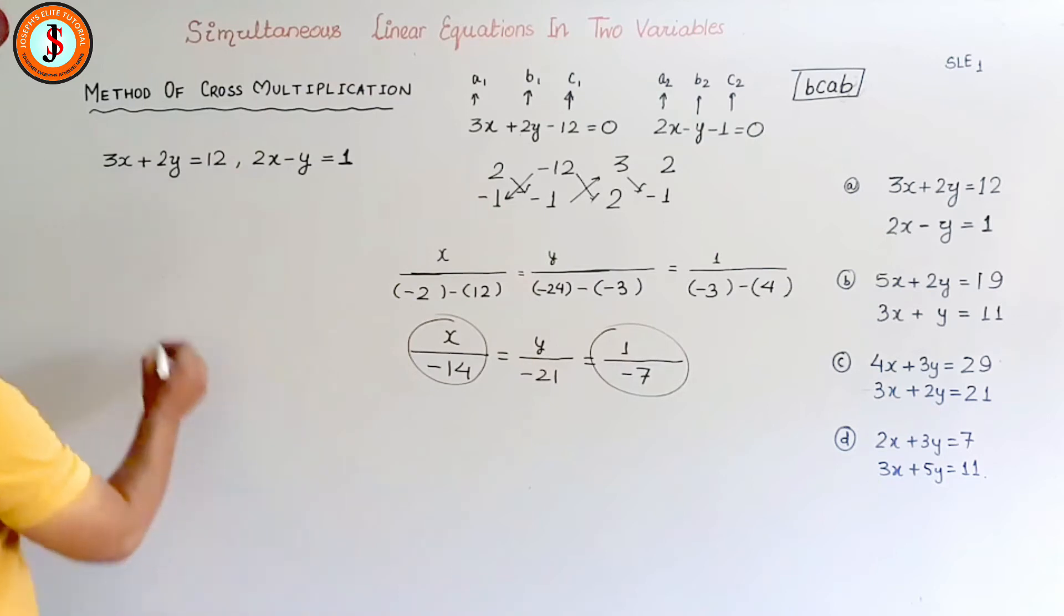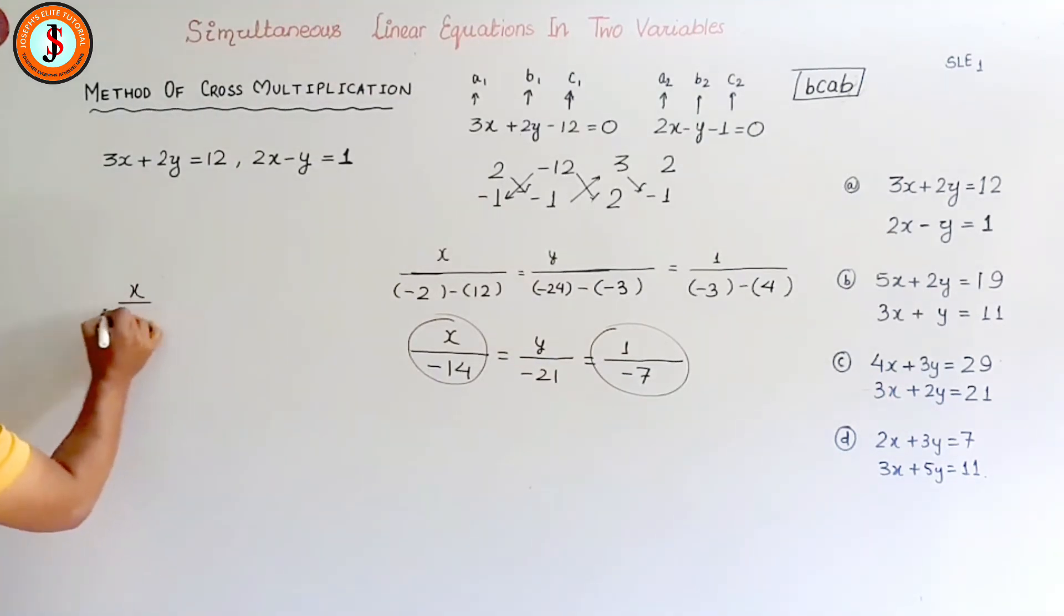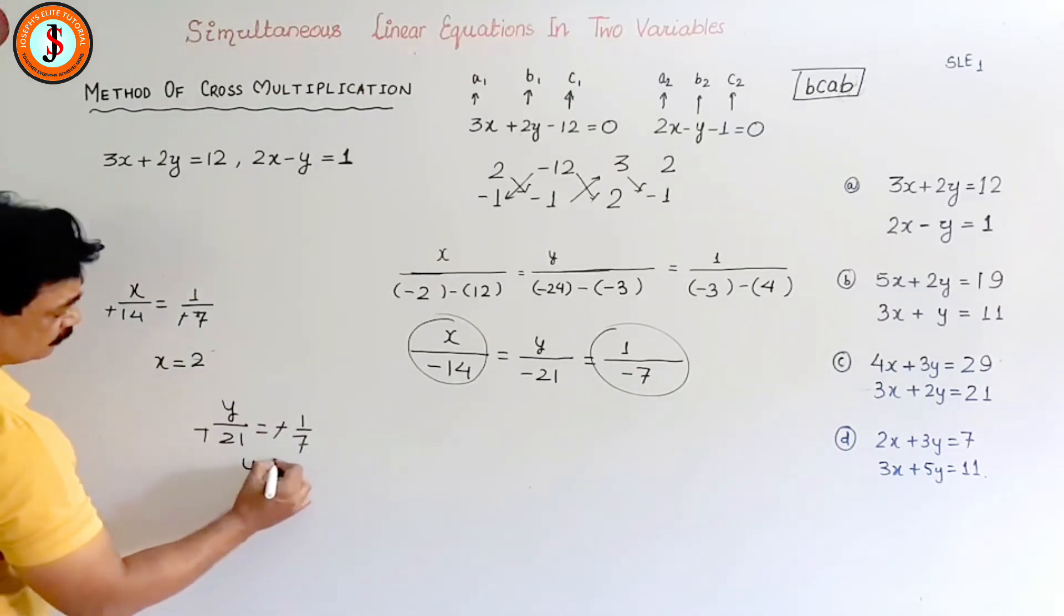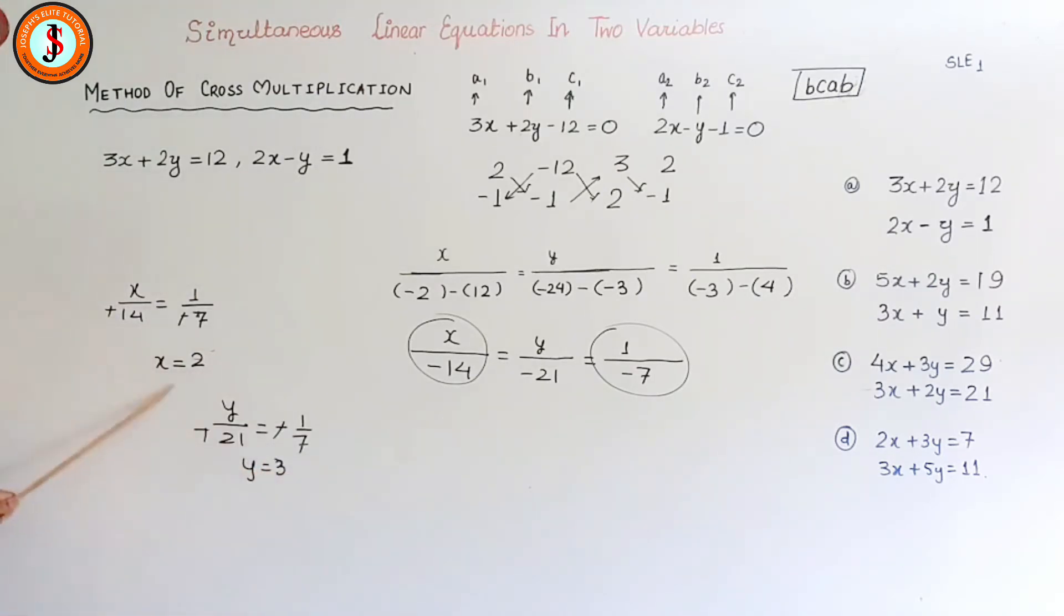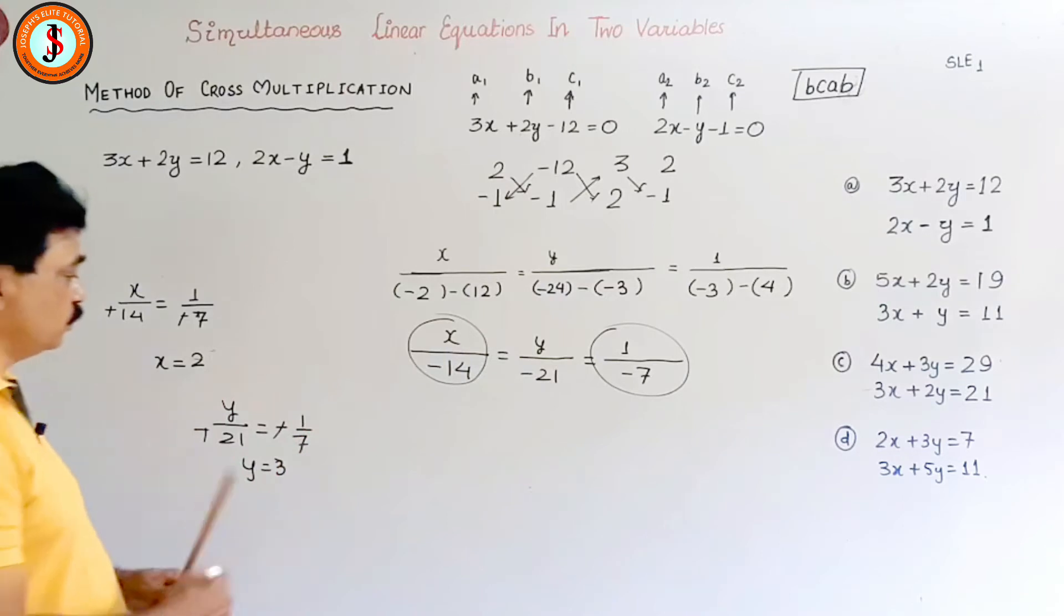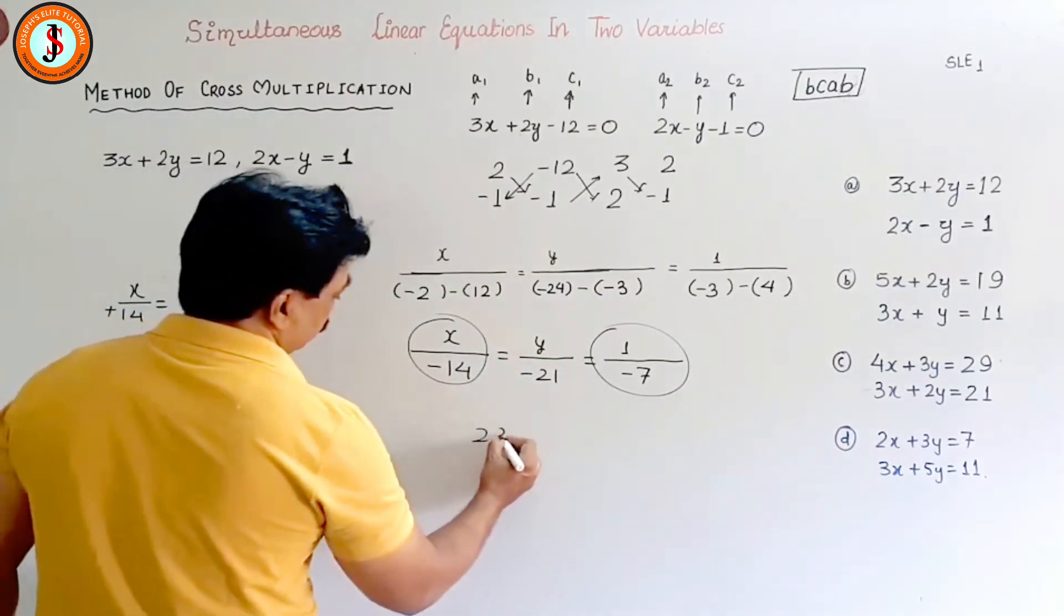Minus 14 is equal to 1 and minus 7. So this negative and negative goes, so x is equal to 14 by 7, that is 2. Then we take y, so y is equal to 21 by 7, that is 3. So x is equal to 2 and y is equal to 3 will satisfy that equation. We can check: x is equal to 2 and y is equal to 3.